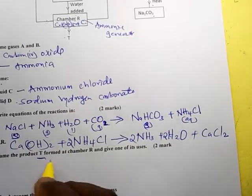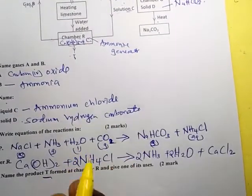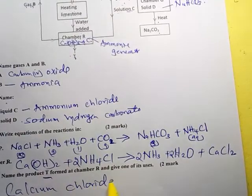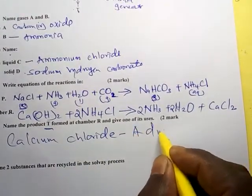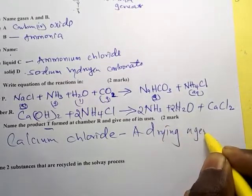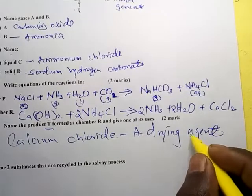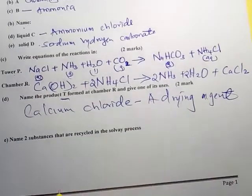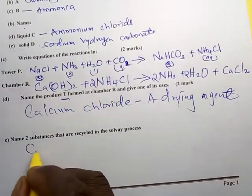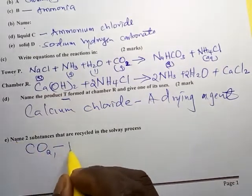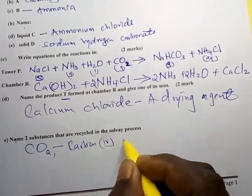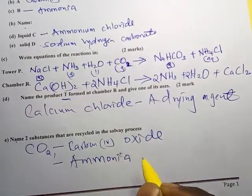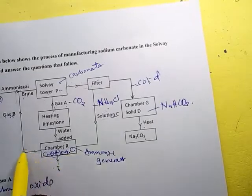Name the by-product: the only by-product in the Solvay process is calcium chloride. Calcium chloride is used as a drying agent. Name two substances that are recycled: carbon dioxide is recycled, and ammonia is recycled. You can see that after ammonia is generated in the ammonia generator, it is recycled back into the process.